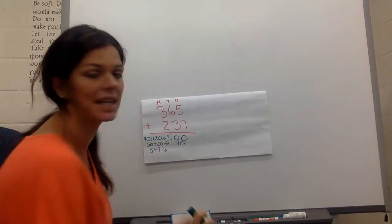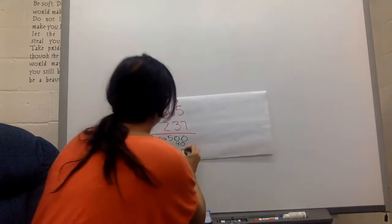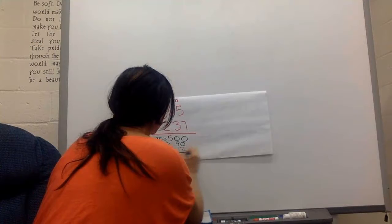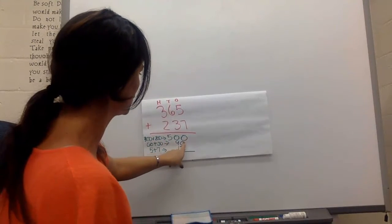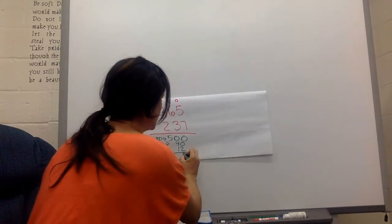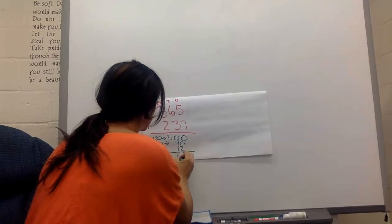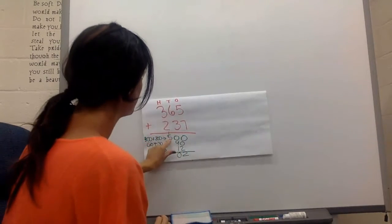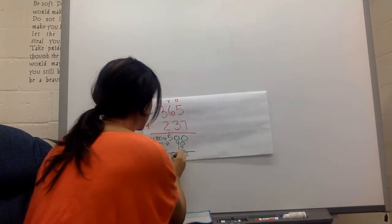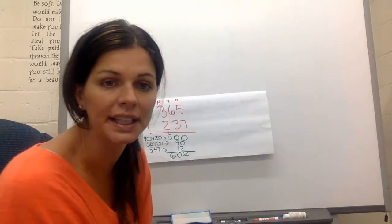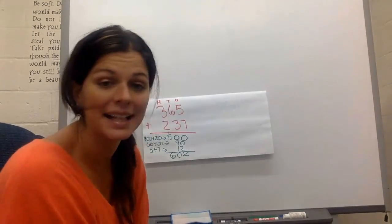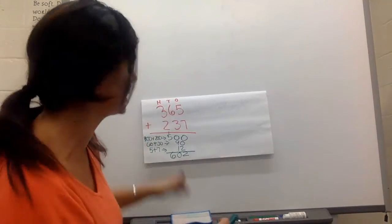Five plus seven is 12. So you line them up, and now you add. Zero plus zero plus two is two. Nine plus one is 10. Five plus one is six. So your answer is 602. Now that's called the partial way, because you broke everything into parts.